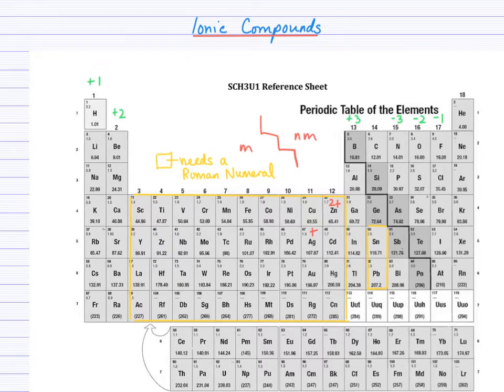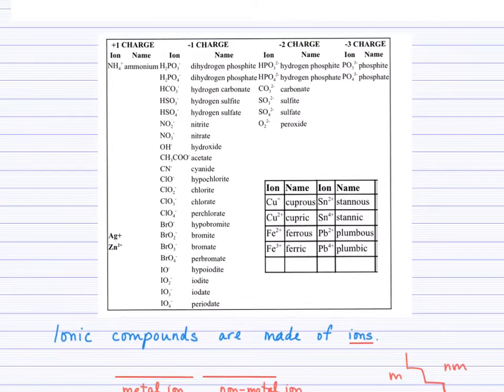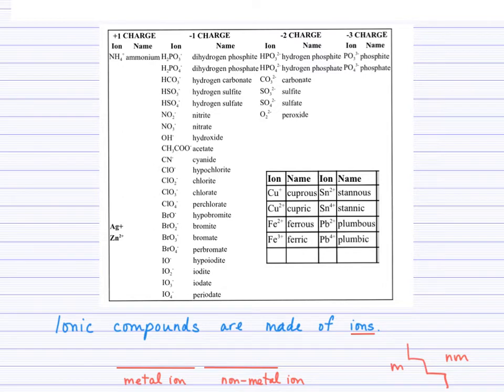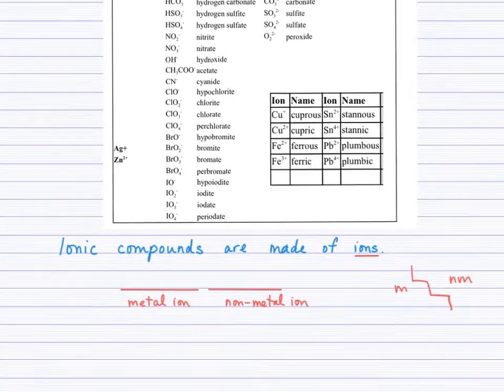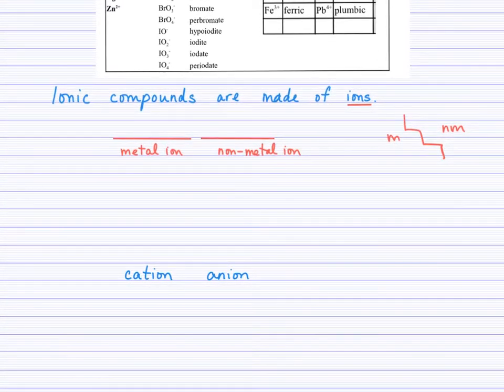And secondly, we'll have the polyatomic ion list, which is supposed to be at your fingertips, as well as the classical names of the copper, iron, tin, and lead ions. So now to move on with the note here. Ionic compounds are, as the name suggests, made up of ions.